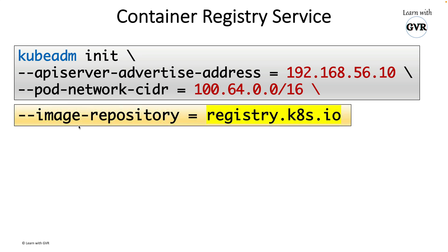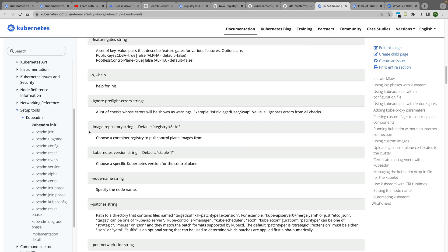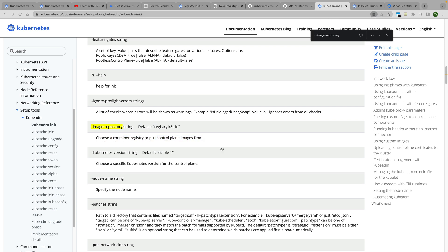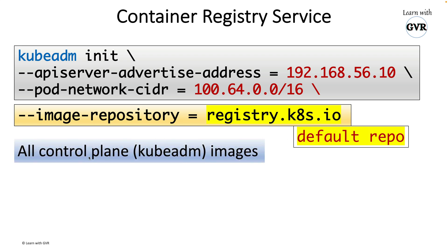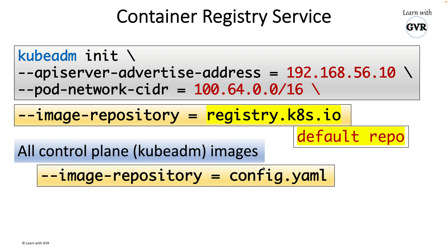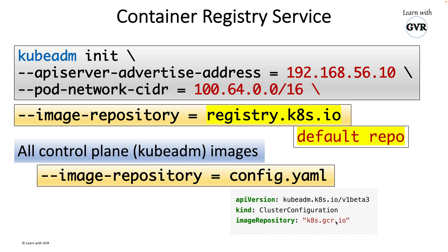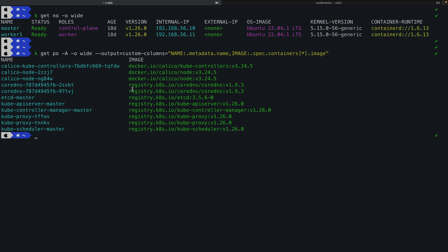Regarding the container registry in CKA: whenever you do kubeadm init with all parameters, by default the image repository is taken as registry.k8s.io — you don't need to specify it. In the Kubernetes documentation for kubeadm init, the default for --image-repository is registry.k8s.io. If you don't specify it, images are automatically pulled from this URL. You can override it with --image-repository and a custom cluster configuration YAML file.